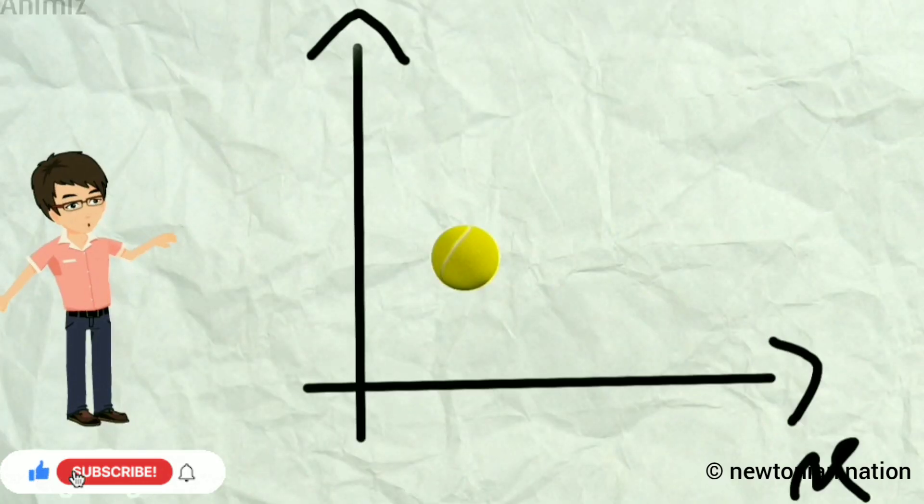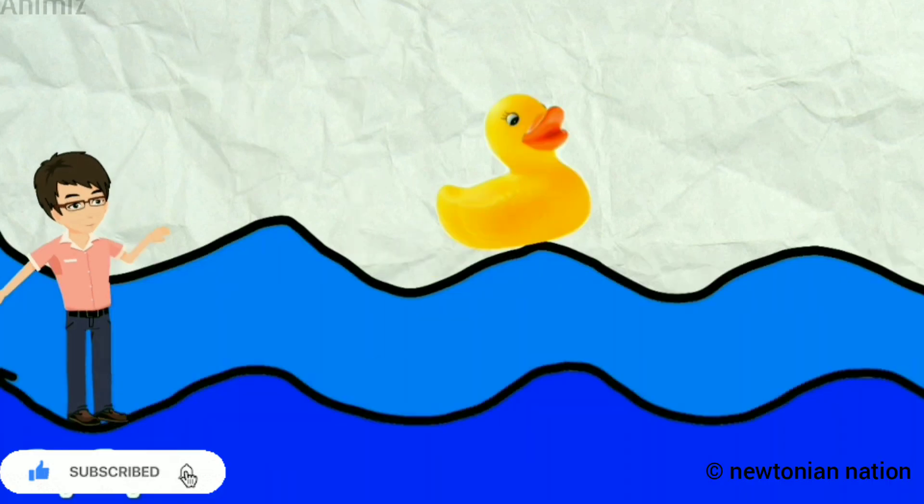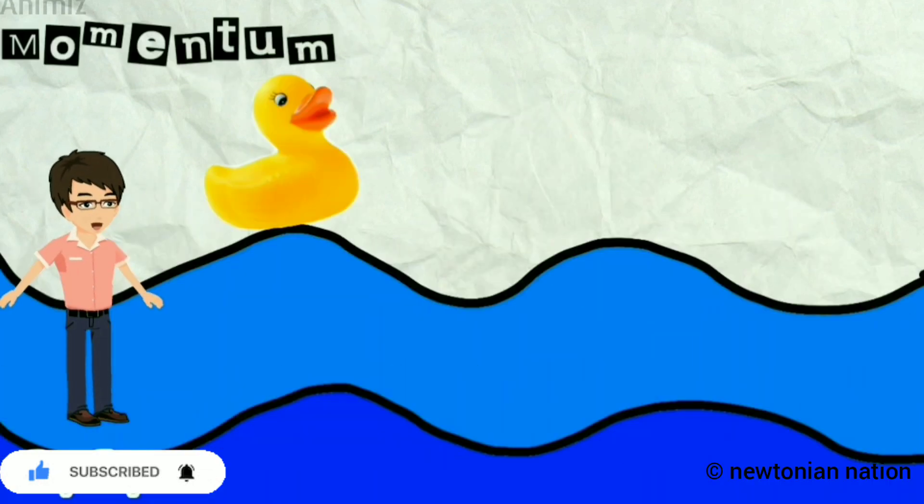For a particle, we can easily find its position but not the momentum. And for the wave, we can find its momentum but not the position.